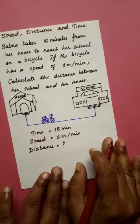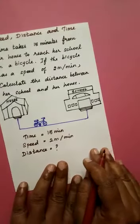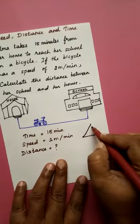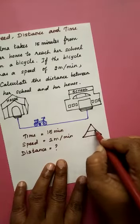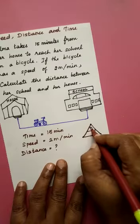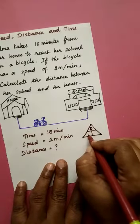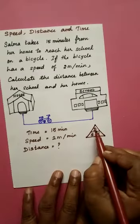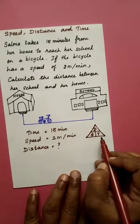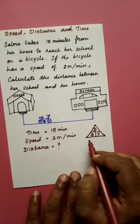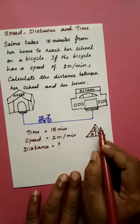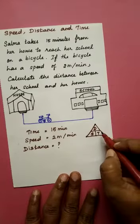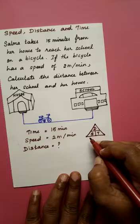There is a formula to find the distance. Before that, you should remember this triangle to calculate the speed, distance and time. Distance, speed, time. If you want to calculate the distance, we should multiply speed with time. If you want to calculate the speed, we should divide distance by time. If you want time, we should divide distance by speed.